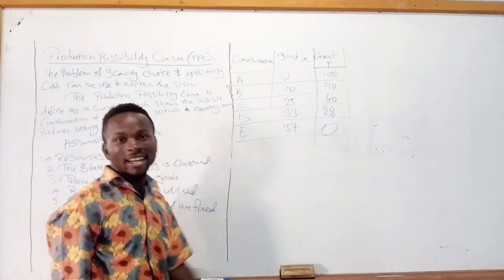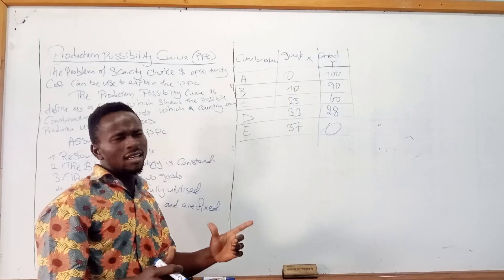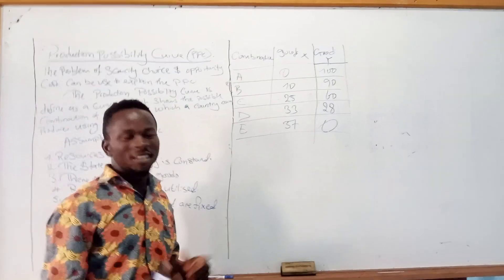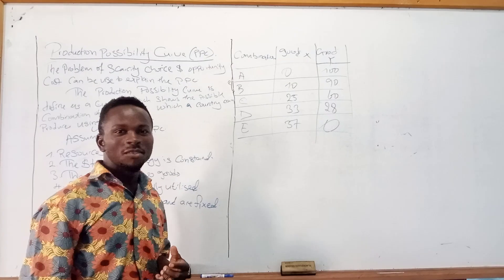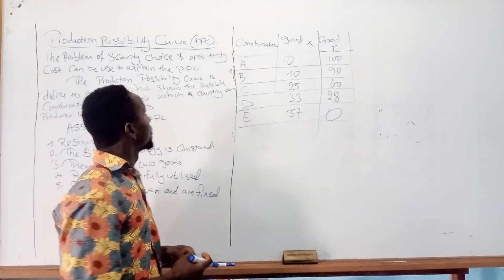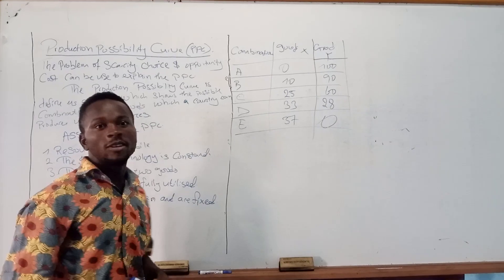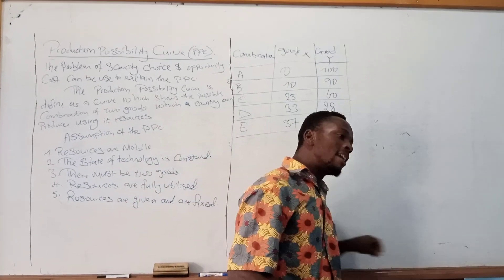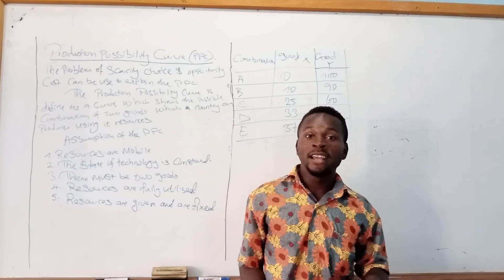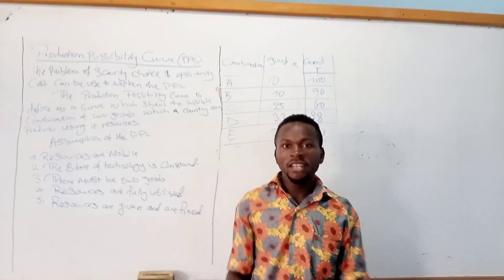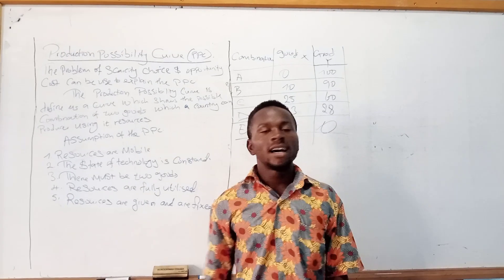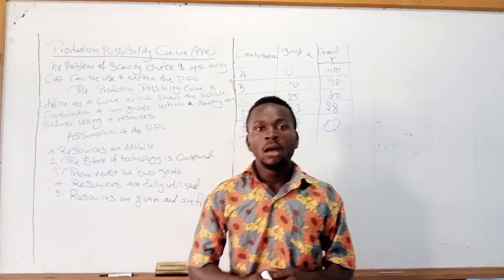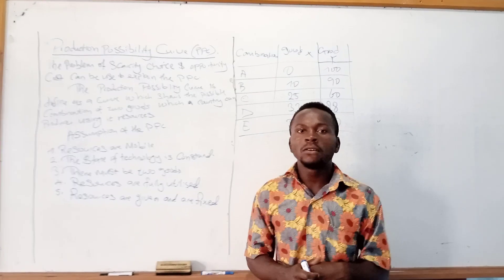Welcome to another edition of our video. We are going to be watching the Enjury Begin Live. Today we are going to be looking at a very important concept that has been confusing so many advanced level students, and we are going to be looking at it in a very grand and explanatory manner. We are going to be looking at the production possibility curve.